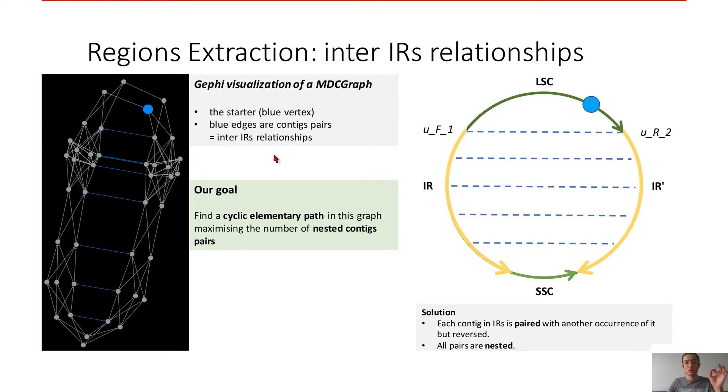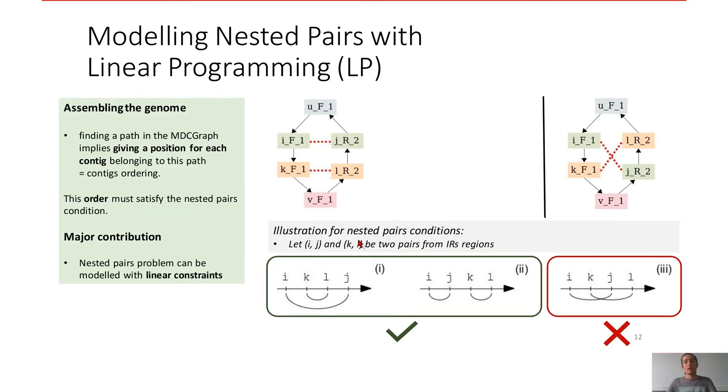So in order to extract the regions, our goal is to find a cyclic elementary path in the multiply double contig graph that maximizes the number of nested contig pairs. So we propose a linear programming to model nested pairs, the nested pairs programming. For us, assembling the genome is finding a path in the MDCG graph, and it implies giving a position for each contig belonging to this elementary path. So it's contig ordering. This order must satisfy the nested pairs condition.